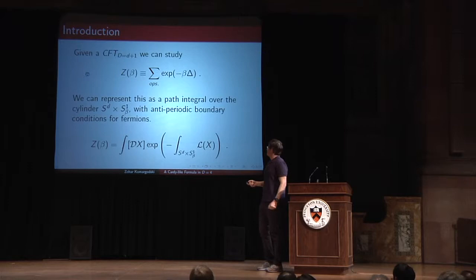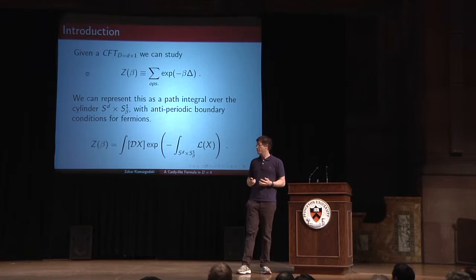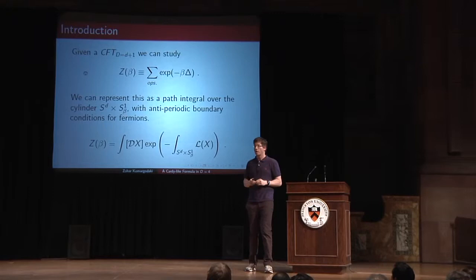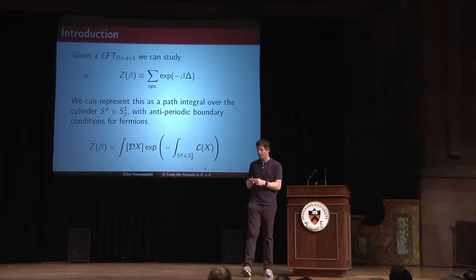This object has a nice path integral representation as the path integral over the generalized D-dimensional cylinder, which is the D-1 dimensional sphere times a circle, where the circle has radius beta. You have to ensure that the fermionic boundary conditions are anti-periodic, so that you don't get a sum with minus one to the fermion number.